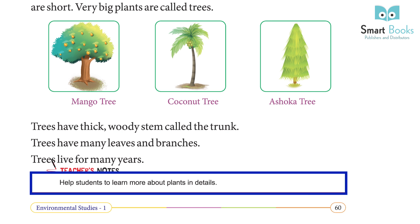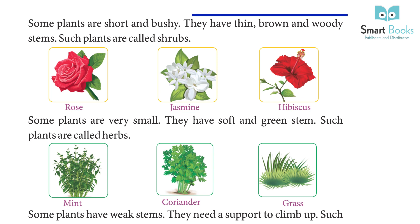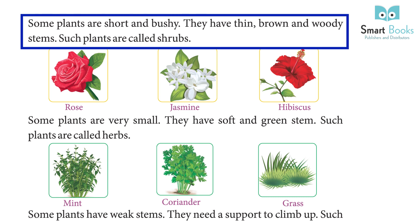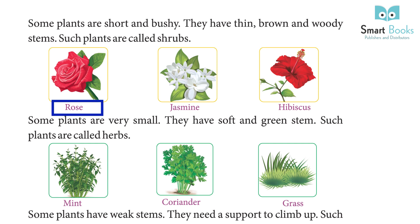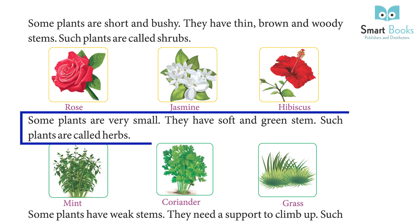Some plants are short and bushy. They have thin, brown and woody stems. Such plants are called shrubs. Examples of shrubs are rose, jasmine, and hibiscus.